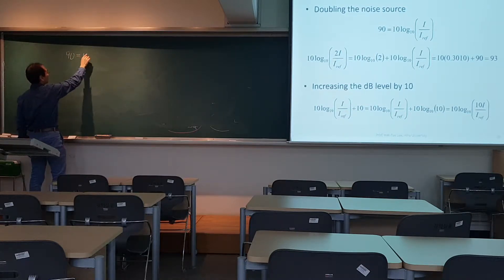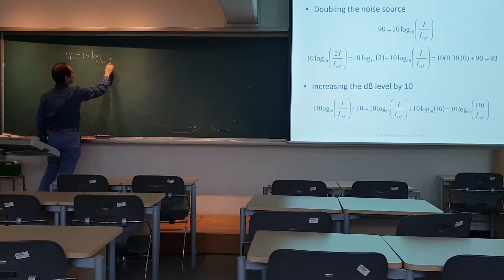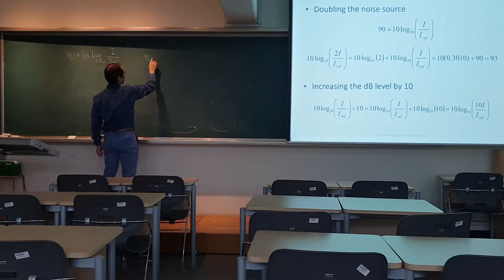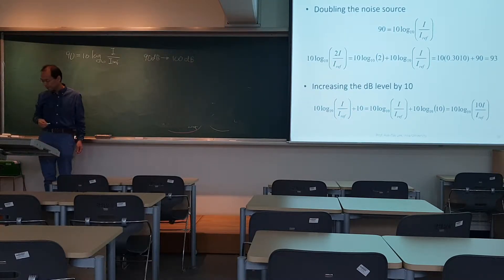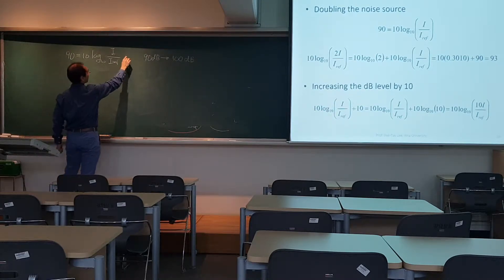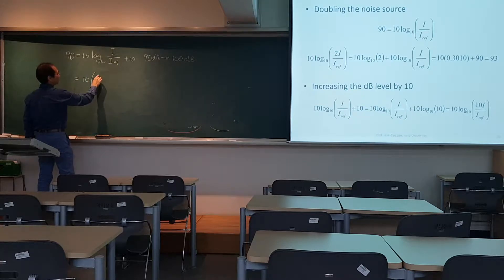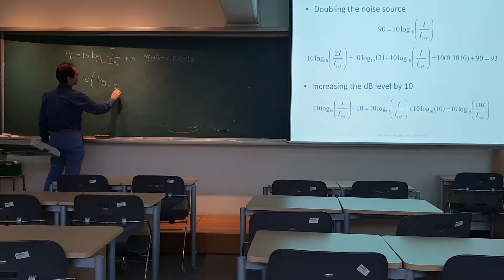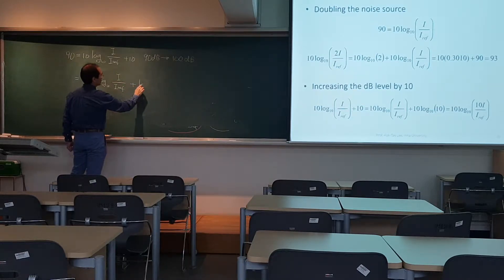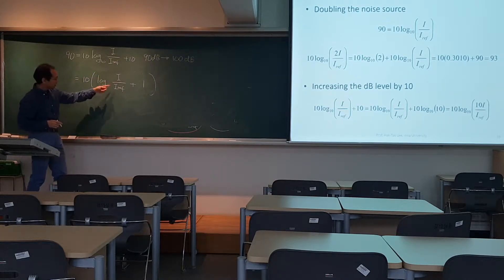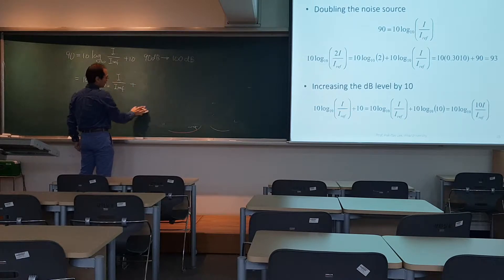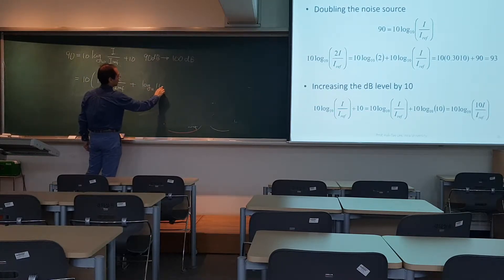The second part was 90 equals 10 log base 10. What does it mean by the 90 decibel becomes 100 decibel? Here, if we add 10, this is 10 log base 10 of I-reference over I, plus log base 10. So this is 1, it's 90 plus 10. And at 1, it's going to be equal to log base 10 of 10.